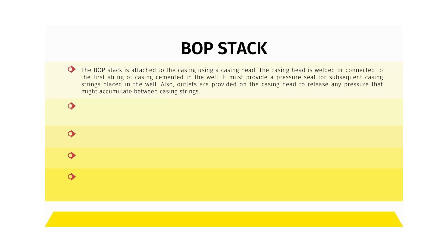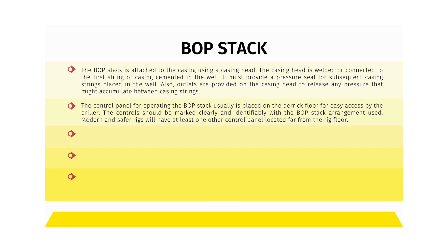A BOP stack is attached to the casing using a casing head. The casing head is welded or connected to the first string of casing cemented in the well, and must provide a pressure seal for subsequent casing strings. Outlets on the casing head release any pressure that might accumulate between casing strings. The control panel for operating the BOP stack is usually placed on the derrick floor for easy access by the driller, and controls should be clearly marked. Modern rigs will have at least one other control panel located far from the rig floor, used if it is necessary to evacuate personnel from the rig floor.